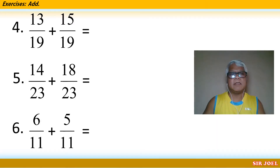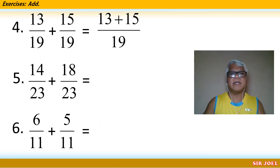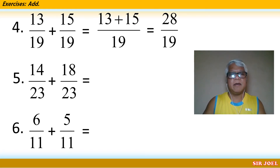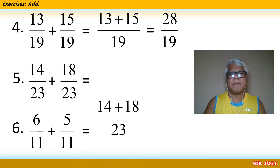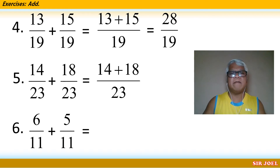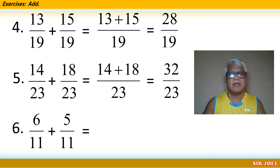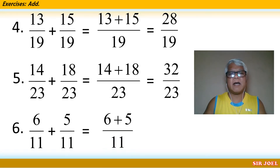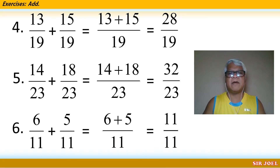Number 4: 13 over 19 plus 15 over 19. Copy the denominator 19, then add 13 and 15 to get 28 over 19. Number 5: 14 over 23 plus 18 over 23. Copy the denominator 23, then add 14 and 18 to get 32 over 23. Number 6: 6 over 11 plus 5 over 11. Copy the denominator 11.